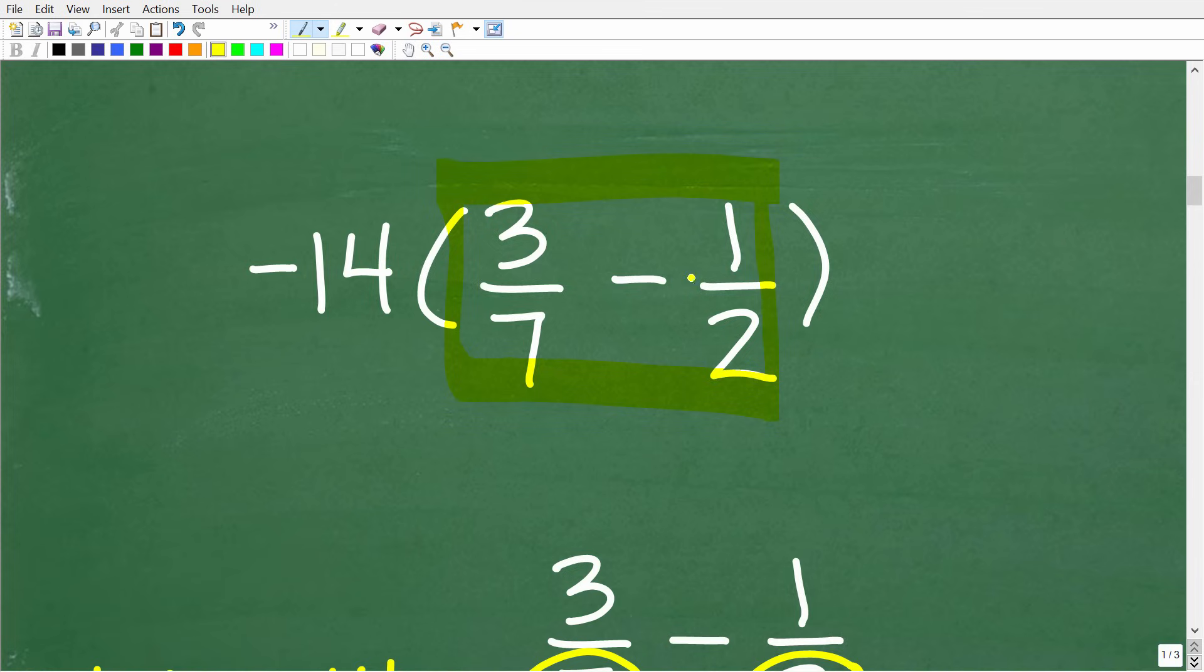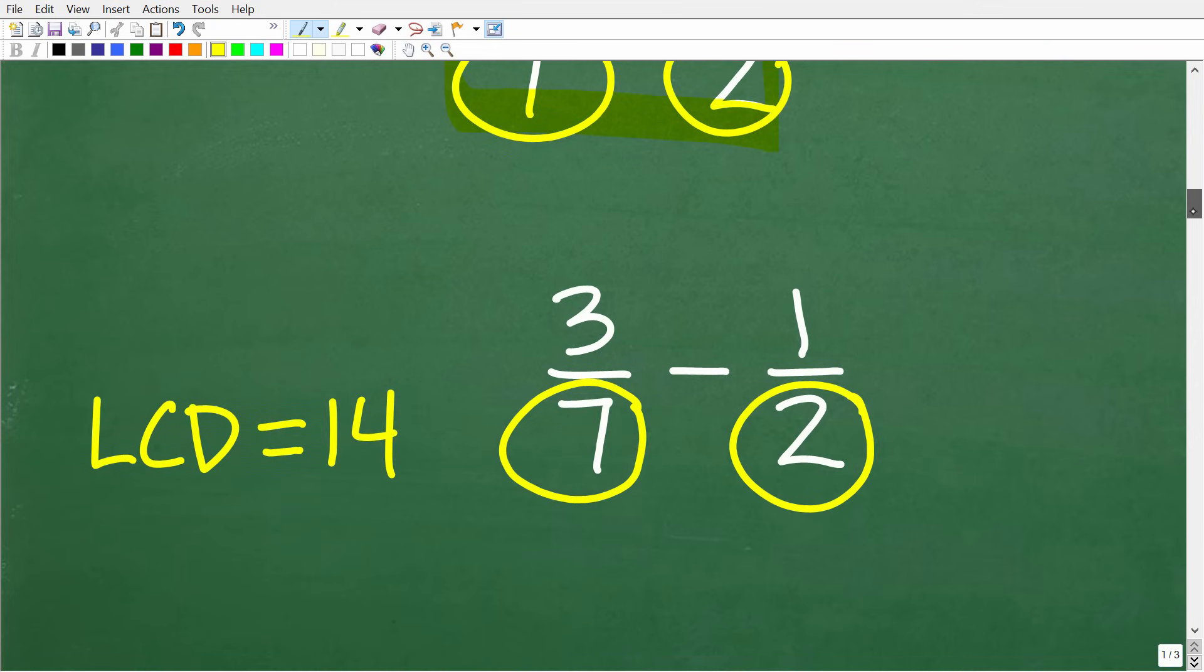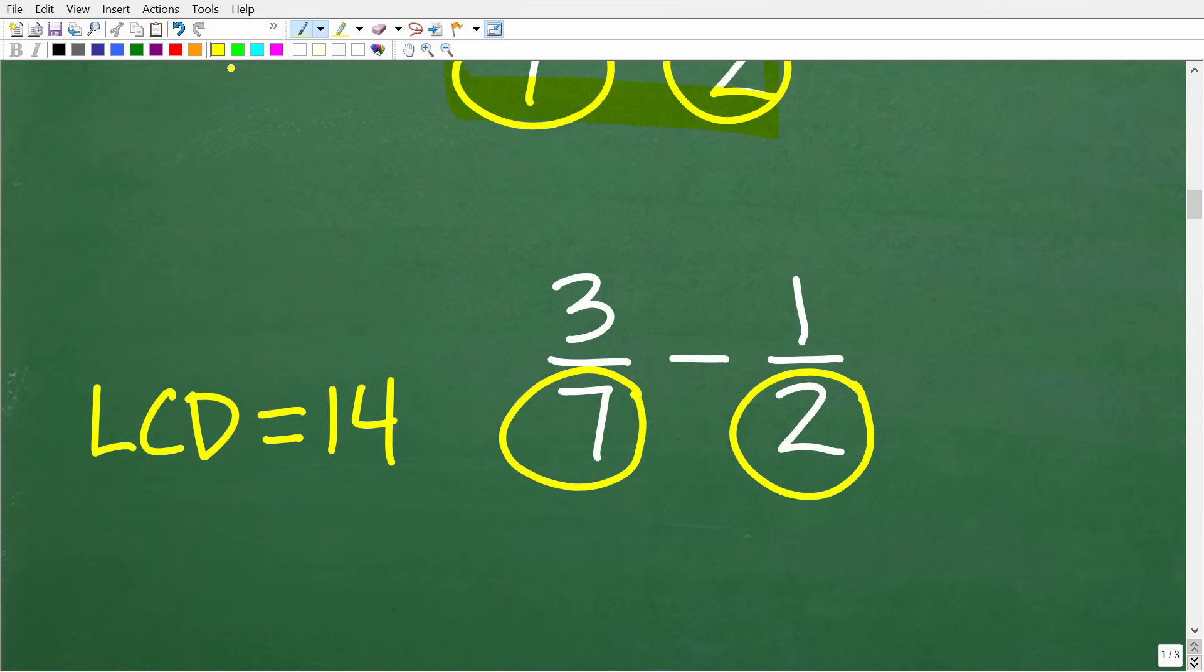But what I want to do is focus in on subtracting these fractions because that's probably what most of you did. But here we have three sevenths minus one half. Now, when we have fractions, you cannot subtract or add fractions unless the denominators are the same. And you can see here we have different denominators.